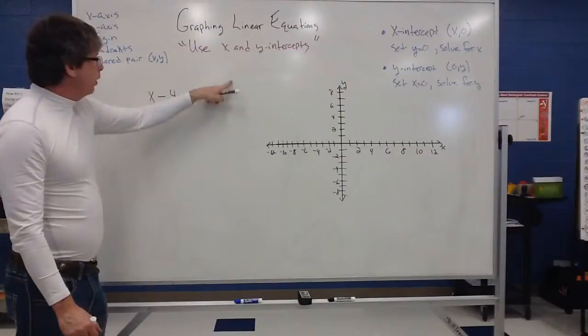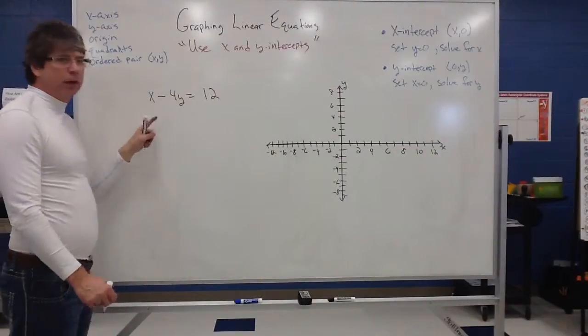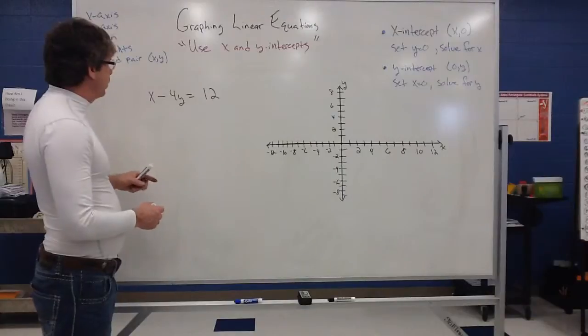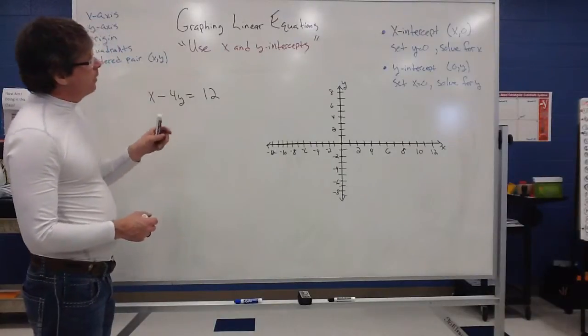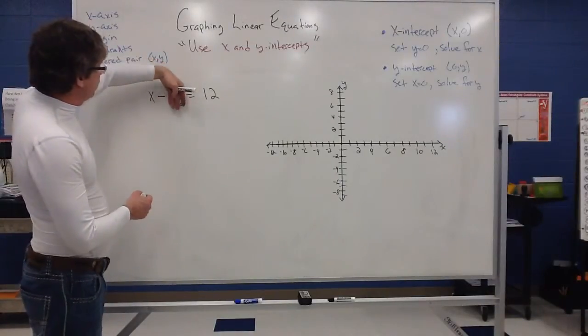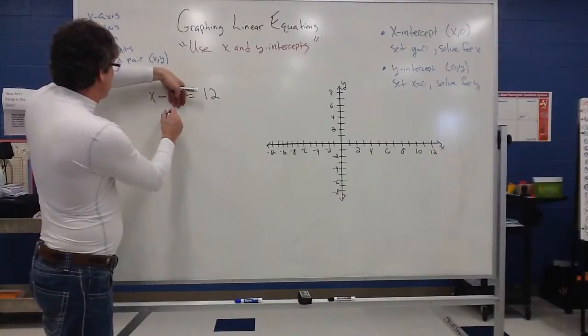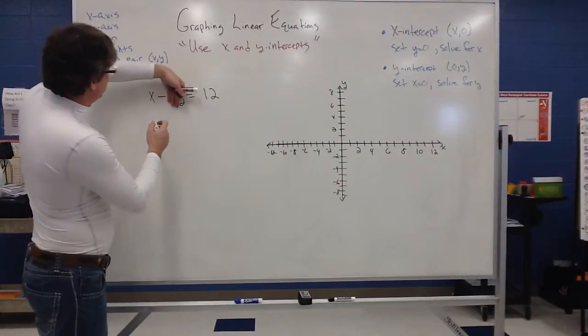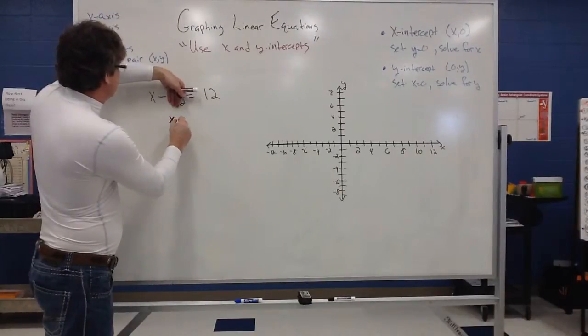I do have an equation this time, and we do like it in this form when we're trying to find the x and y intercept. It just makes it a lot more natural. So if I'm going to find the x intercept, I'm setting y equals 0. So this term disappears, and since this disappears, you have x equals 12.